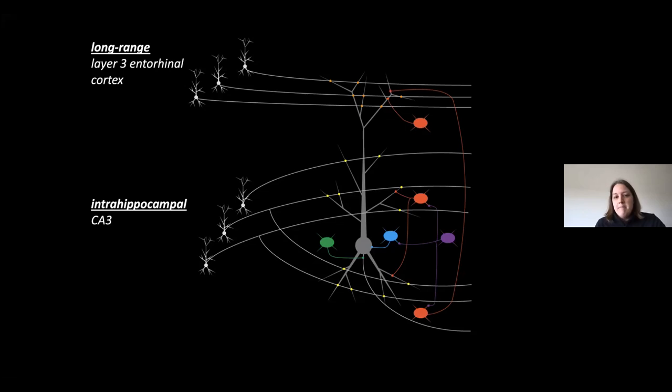We know from previous work that inputs coming from CA3 are themselves spatially tuned. Cells in CA3 are also place cells. While it is less clear what the layer 3 entorhinal cortex inputs do, about 10 to 20% have some kind of spatial tuning too, but they are usually described as sloppily spatially tuned. Combining all these inputs, in light of these diverse synaptic inputs, the question I'm going to address in my talk today is: what are the circuit mechanisms underlying CA1 place cell activity? In other words, what is the relationship between these synaptic inputs and the place cell output of CA1 pyramidal cells?